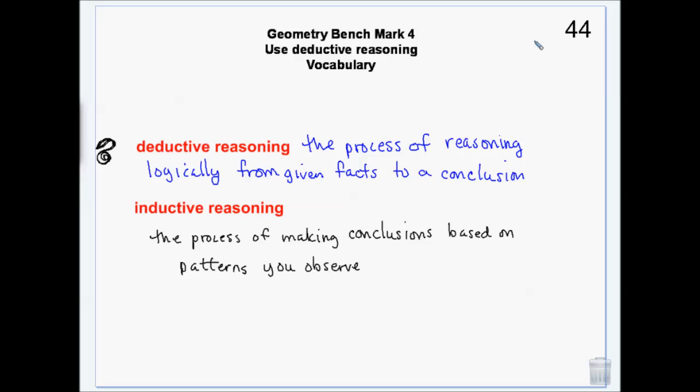Deductive reasoning is a process of using hard facts to come to a conclusion. Math is deductive reasoning — we use known facts and theorems and move through those to get to a conclusion. Inductive reasoning is where you make conclusions based on patterns that are observed. Sherlock Holmes uses inductive reasoning — he observes things and then makes conclusions. For example, if you notice every day somebody has a Starbucks cup, you'd conclude they really like Starbucks coffee — but it may or may not be true, since they might be getting tea.